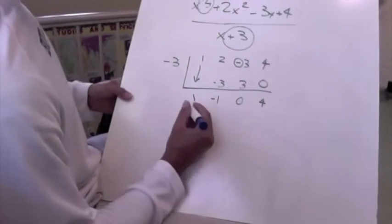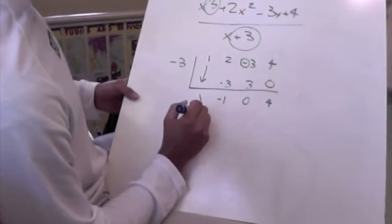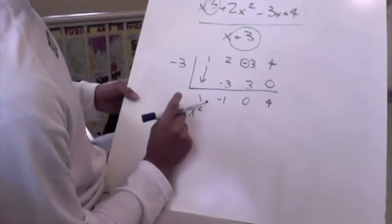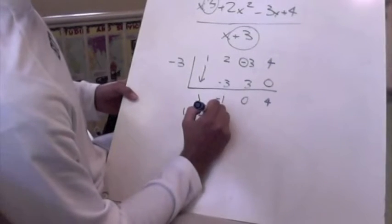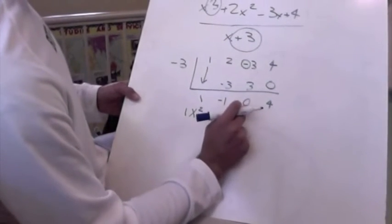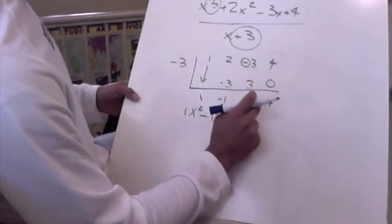So our answer is going to look like this. x squared, we can really say that this is a 1, we can include that there, minus 1x. Since this is 0, we don't have to have anything here. This would be our constant.